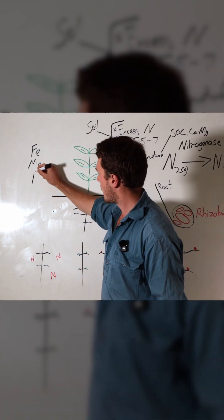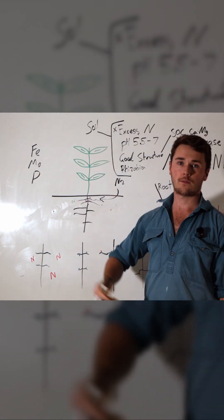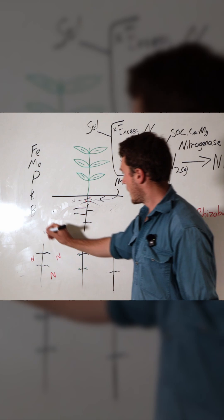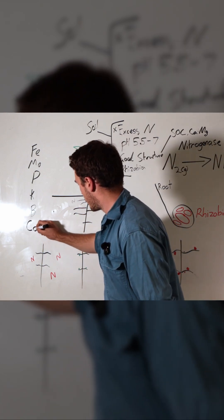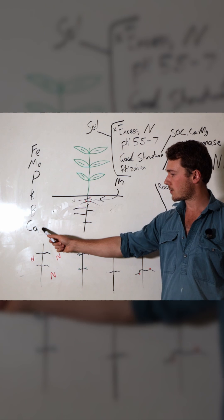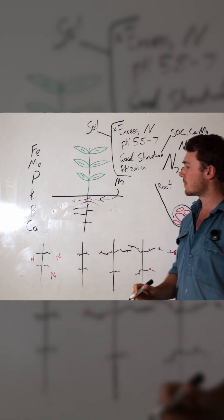The next one is phosphorus, which is required for ATP production. Next is calcium. We want to make sure we have a good amount of calcium supplied to the crop.